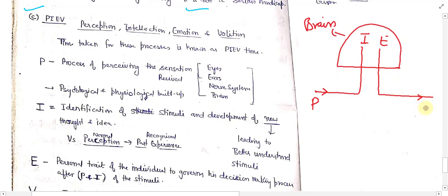That final response is known as Volition. Perception is the process of receiving information through eyes, ears, nerve system, and brain, and this perception depends on both psychological and physiological build-up of a road user.